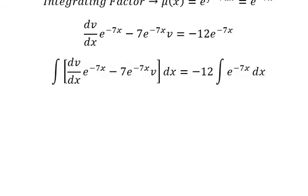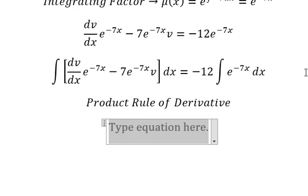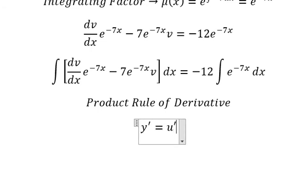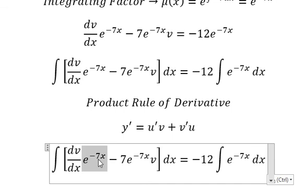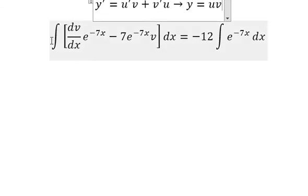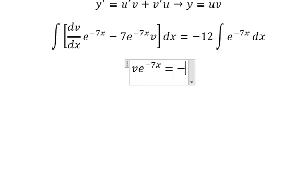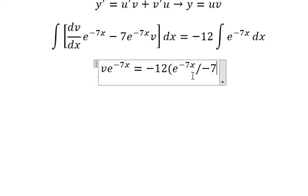Now we can apply the product rule of derivatives. We have the first derivative of (u times v) equals the first derivative of u times v plus u times the first derivative of v. Looking carefully, negative 7 times e to the power of negative 7x is the derivative of u, so integrating both sides gives v times e to the power of negative 7x.